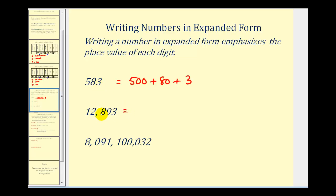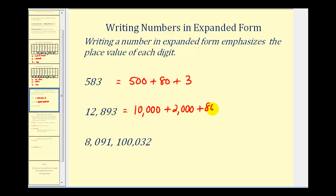So for twelve thousand, eight hundred ninety-three: this one represents one ten-thousand, or ten-thousand, plus two one-thousands, or two-thousand, plus eight hundred, plus this nine represents ninety, and the three represents three.